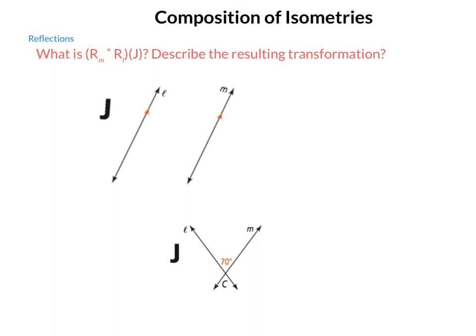So what is reflection across M composed with reflection across L of object J? And describe the resulting transformation. So first up, I have line L and I have line M. As we see, they are given as being parallel. And we're going to take J and reflect it first across L and then across M. So do pay careful attention to the order that these things happen in.